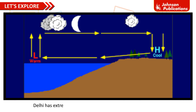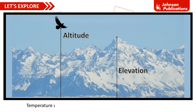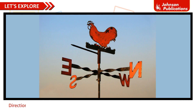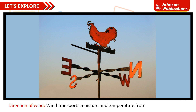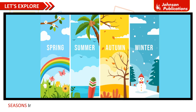Delhi has extreme climate and Bengaluru has moderate climate. Altitude is another factor — locations at a higher altitude have colder temperatures. Temperature usually decreases by 1 degree Celsius for every 100 meters in altitude. Wind direction also affects climate, as wind transports moisture and temperature from one area to another. Weather conditions change with the shift of wind direction.